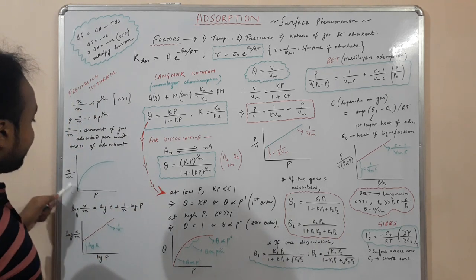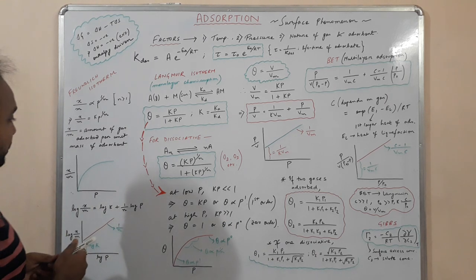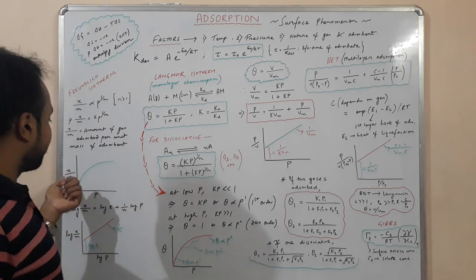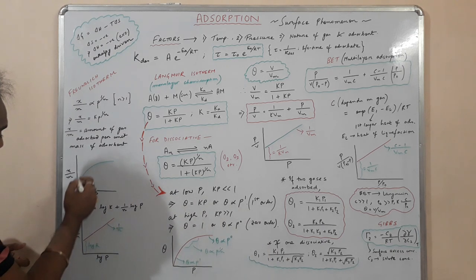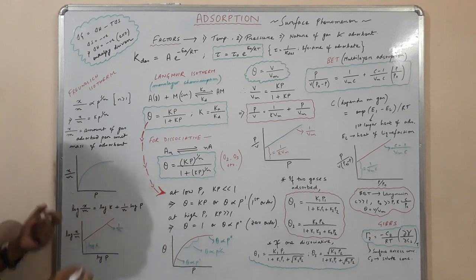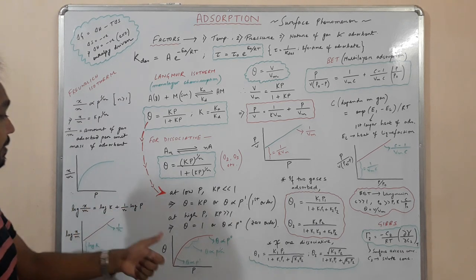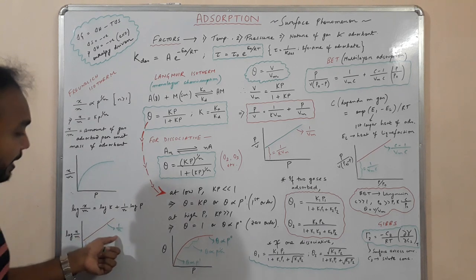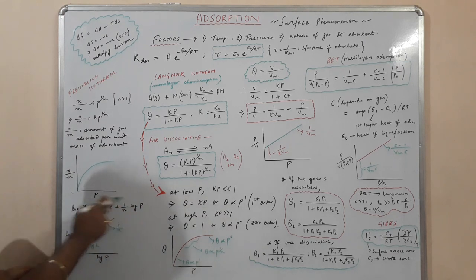If we plot x/m versus p, we get a curve where at high pressure x/m becomes constant, following zero-order behavior, and at low pressure it follows first-order behavior. Taking the logarithm gives: log(x/m) = log k + (1/n)·log p. When we plot log(x/m) versus log p, the slope is 1/n and the intercept is log k.